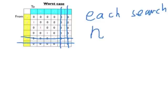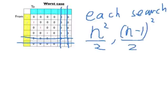The first search takes us something like n squared over 2. The second search takes us something like n minus 1 squared over 2, and then we have n minus 2 squared over 2.